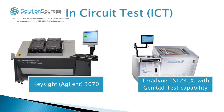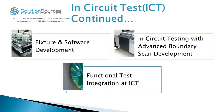The most common in-circuit test platforms are the Keysight, formerly known as Agilent 3070, and the Teradyne TS-124. Please note that the TS-124 has backwards compatibility with the GenRed test station platforms. In-circuit test development consists of a base platform as previously shown, a fixture in software development, and for today's modern products, circuit testing often includes advanced boundary scan development.